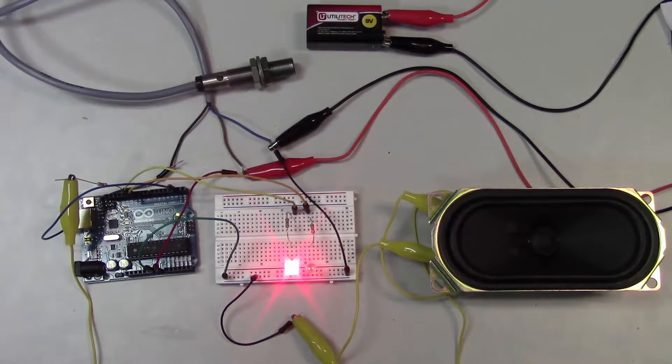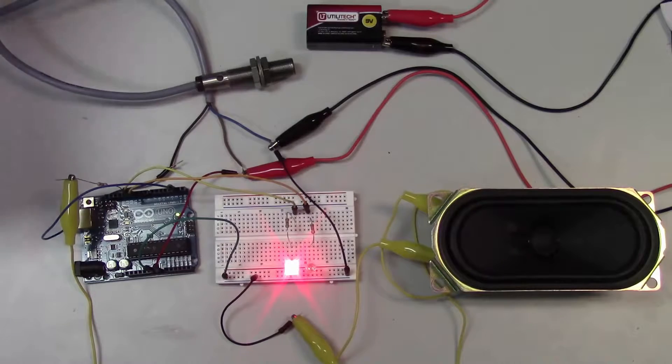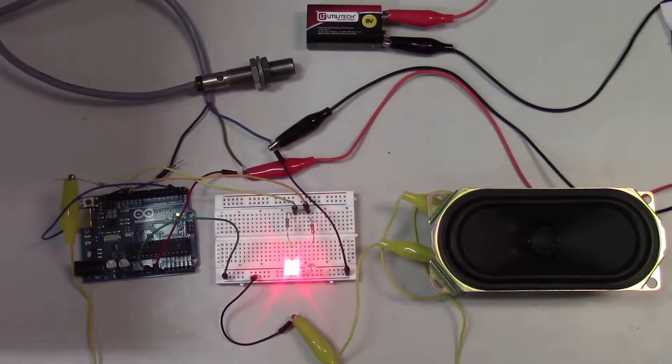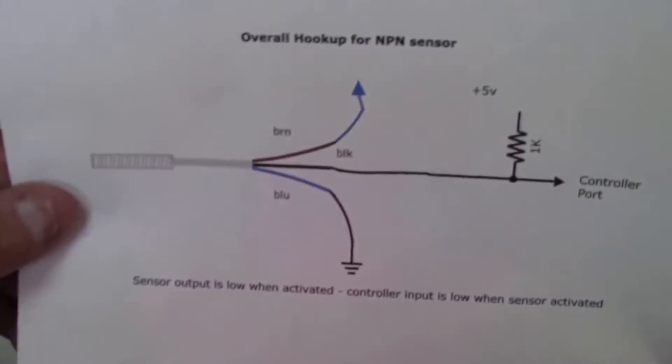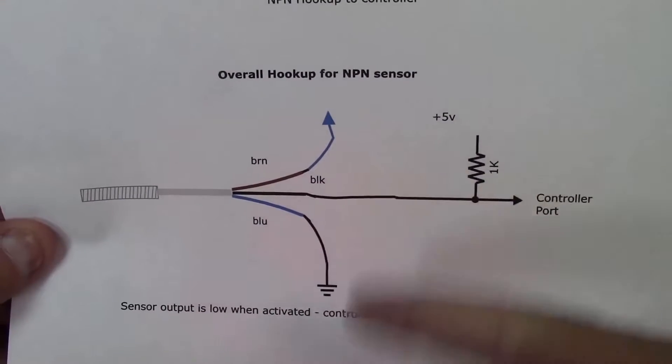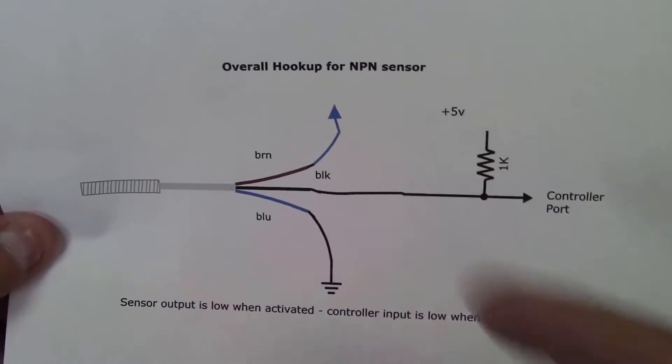One of my viewers wanted to know how to hook up an industrial proximity sensor or any kind of industrial sensor for that matter to an Arduino. Here's a drawing from a handout I produced a while back, and this basically just shows how you would typically hook up a sensor.